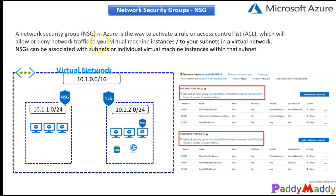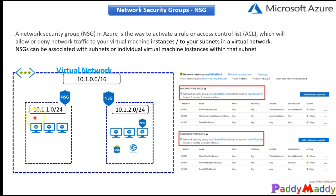For incoming traffic from the internet trying to reach inside your subnet, you are blocking by default and only allowing specific ports. For example, if you're sitting at home and trying to RDP into a virtual machine over its public IP, RDP works on port 3389. Only if that rule matches for inbound traffic will the connection be allowed; otherwise it will be blocked.